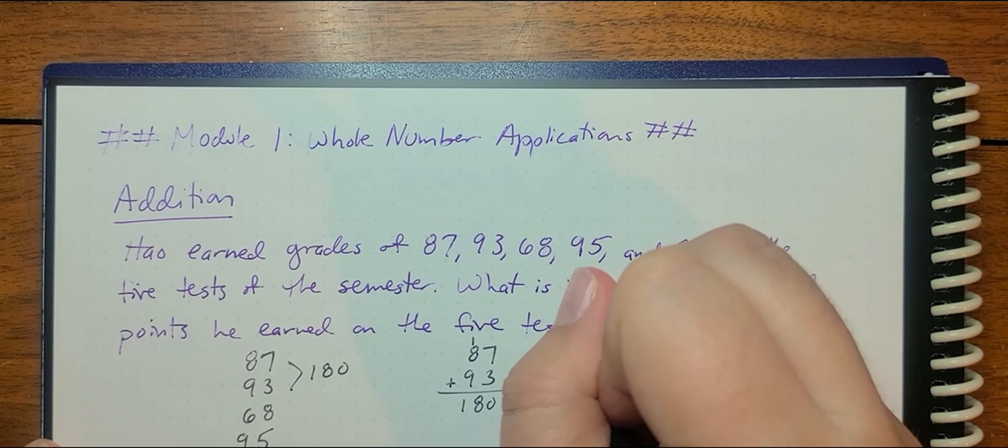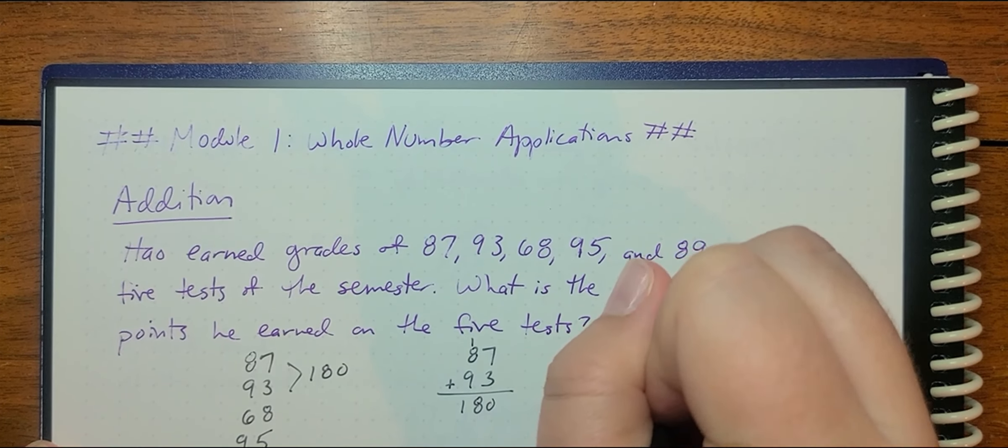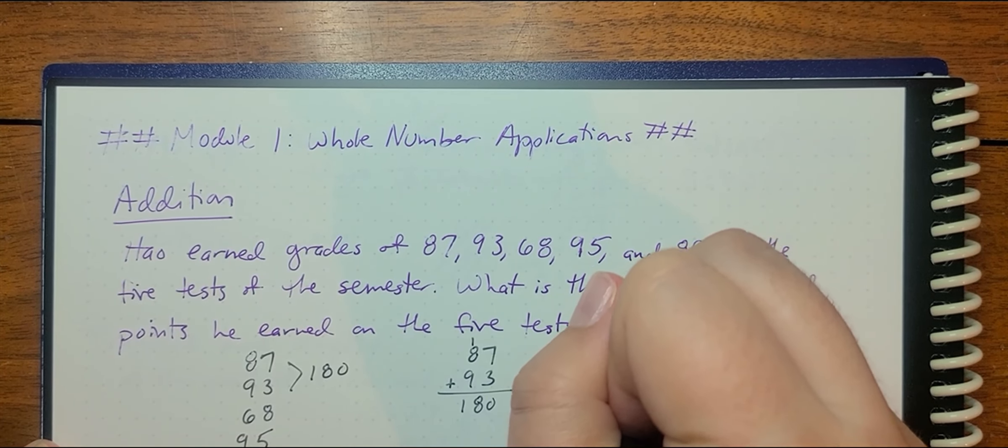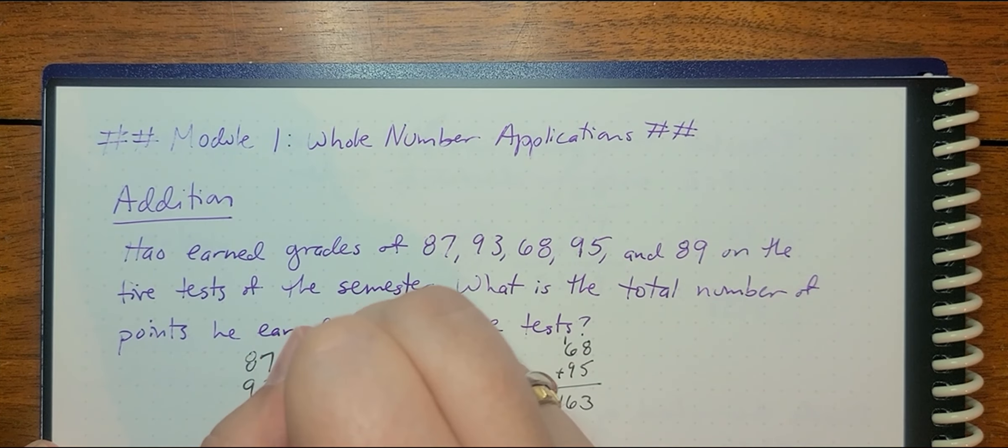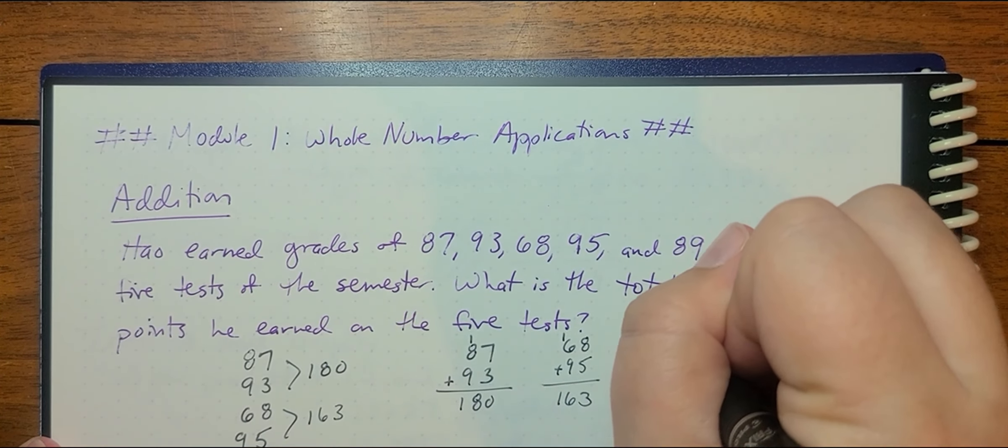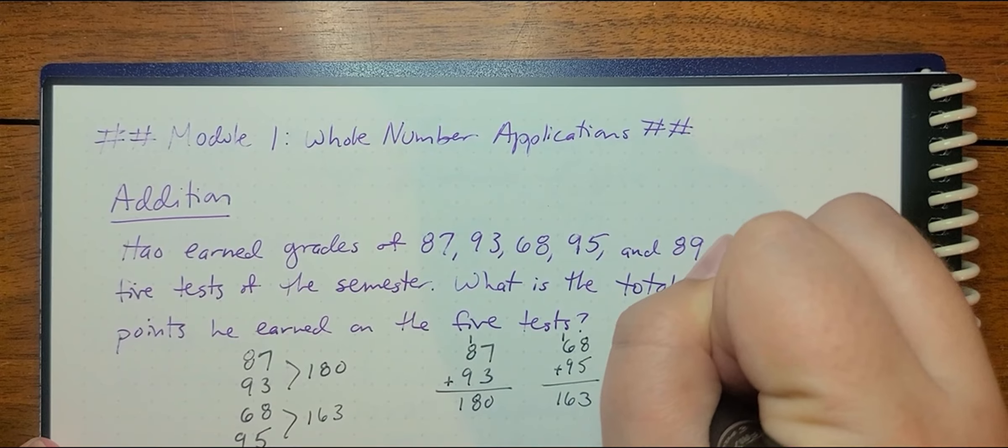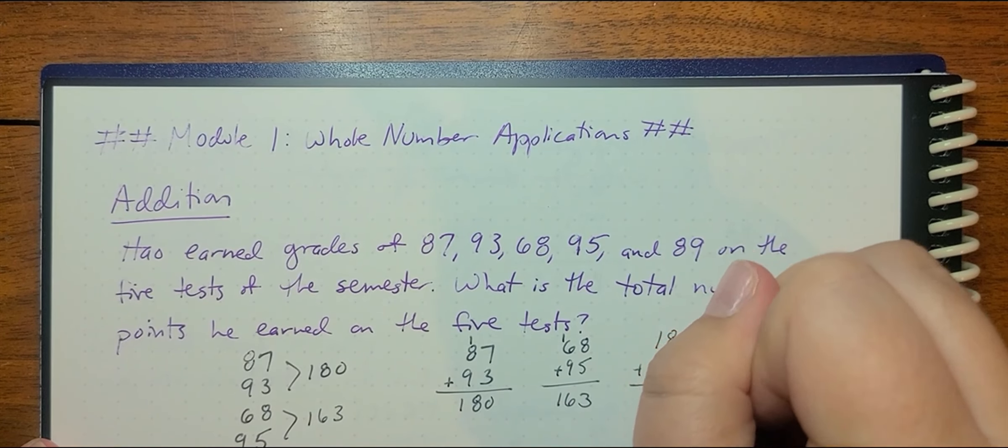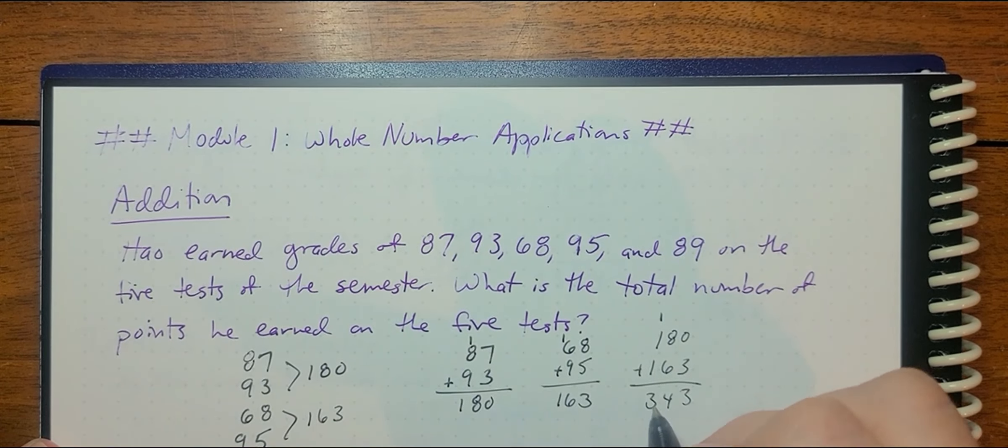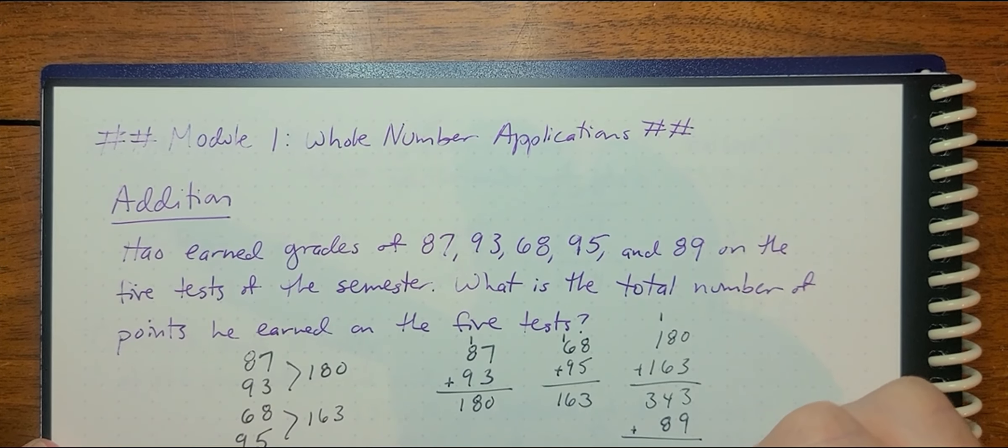Then if I have 68 plus 95, this will be 163. And then I can add these together. So I'm going to have 180 plus 163, plus I can't forget this 89 here.